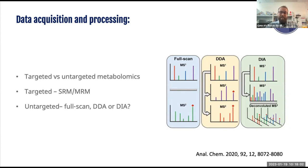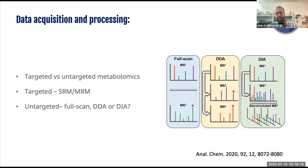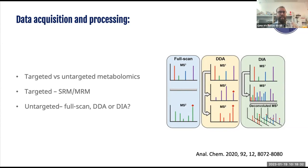For untargeted metabolomics you have three main options: full scan, DDA (data-dependent acquisition), or DIA (data-independent acquisition). Full scan just runs a full scan in a very wide mass-to-charge window and quantifies everything with no selection at all. DDA is more complicated — it selects the most intense precursor ions going into the first part of the mass analyzer, fragments those, and you piece them together from the result.